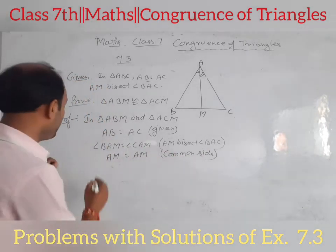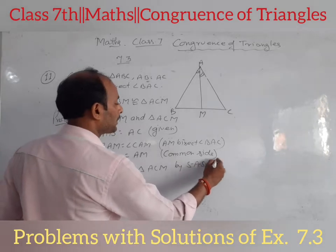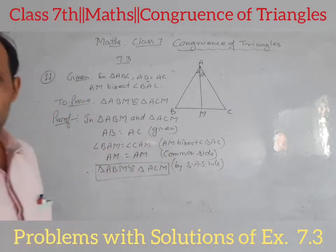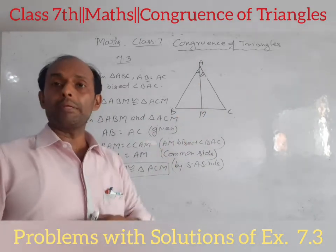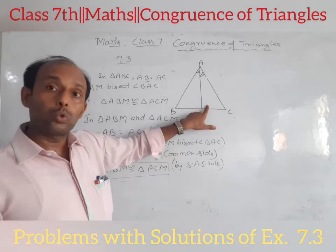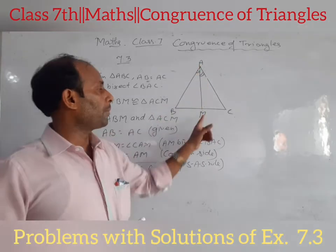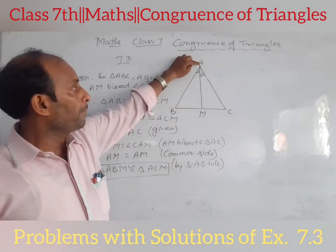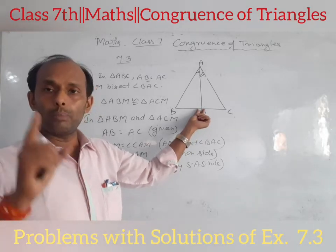AM is the common side. Angle BAM equals angle CAM as AM is the angle bisector. Therefore, triangle ABM is congruent to triangle ACM by the Side-Angle-Side rule. From this we conclude that BM is equal to CM, and also that AM is perpendicular to BC — meaning AM is the perpendicular bisector from vertex A to the opposite side.